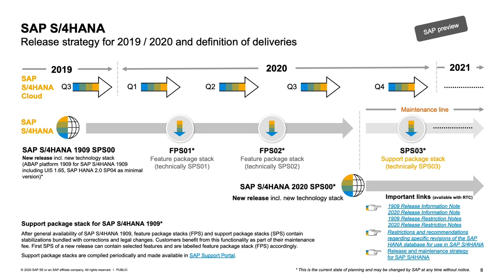Feature Package 1 for the 2020 release is expected at the end of Q1 next year, followed by Feature Package 2 a quarter later, then the release goes into maintenance. The release strategy documents and related release information notes are stored in the SAP Support Portal, with links provided on the slide.